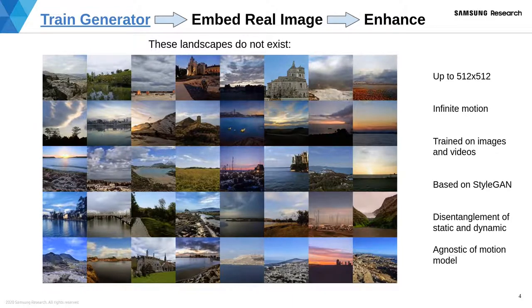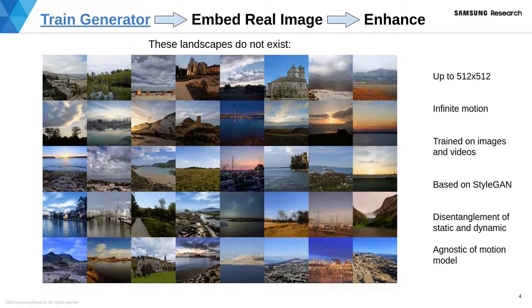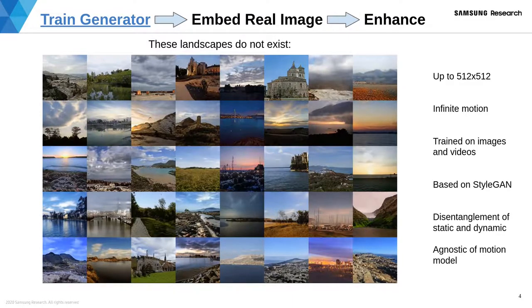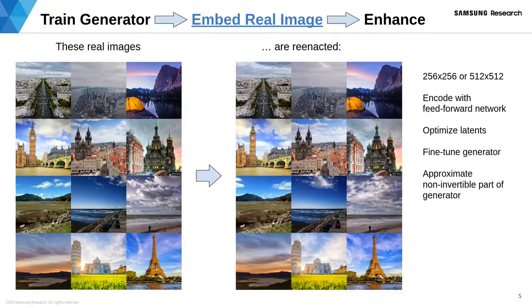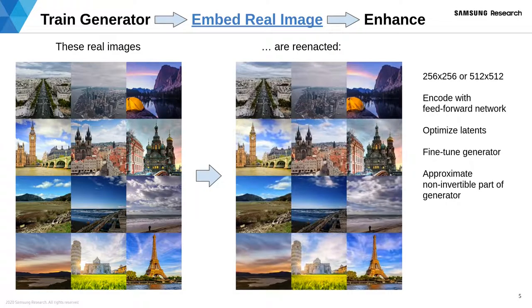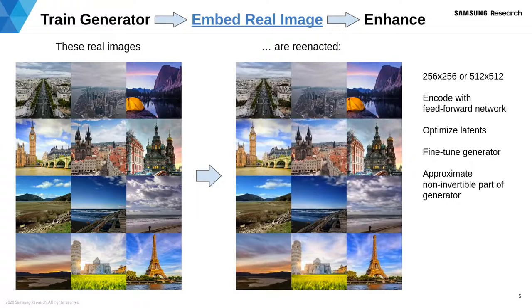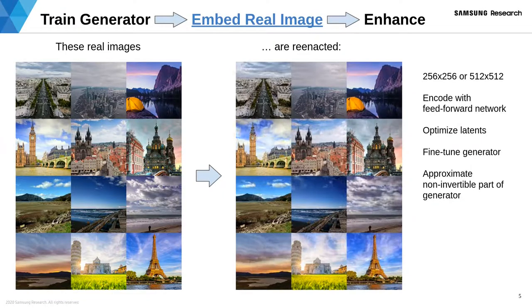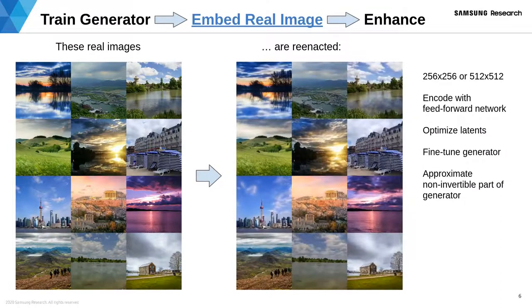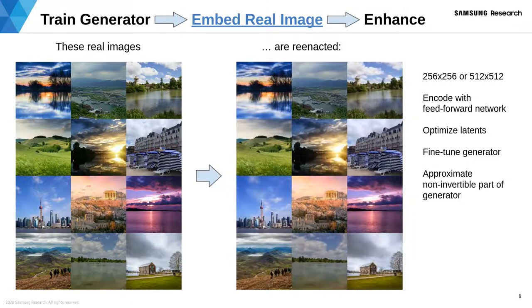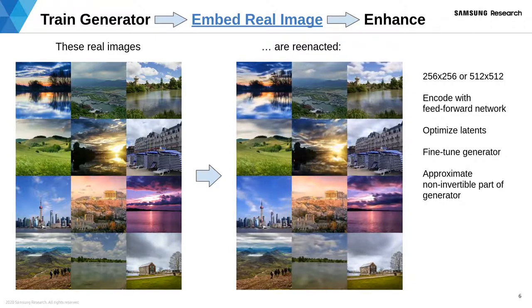It's based on StyleGAN architecture and trained for disentanglement of static and dynamic details. The second component is a generator inversion procedure, which embeds a given real image into the latent space of the generator. Our inference algorithm leads to in-domain latents, making manipulation of real images possible.